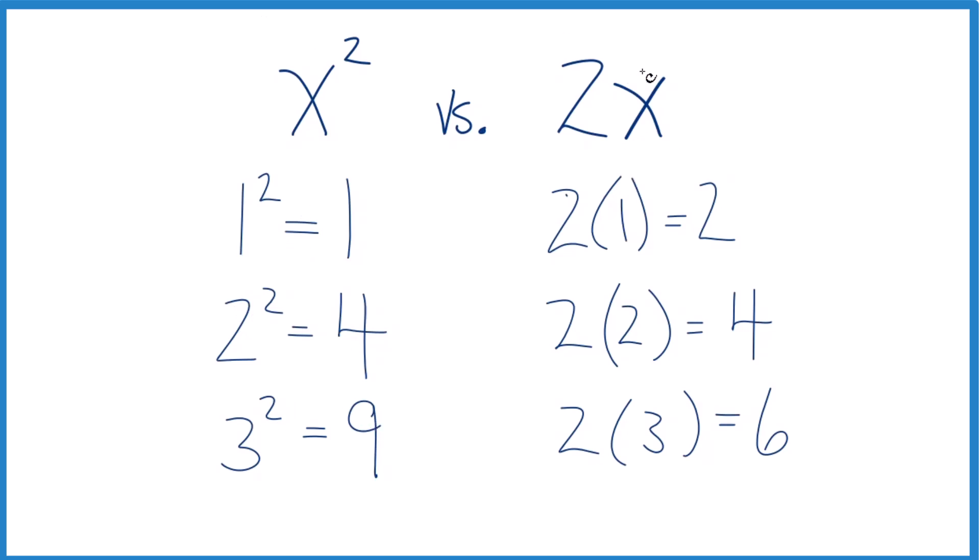For 2x though, if we put 1 in for x, 2 times 1 is 2. So that's different. If we put 2 in for x, 2 times 2 is 4.